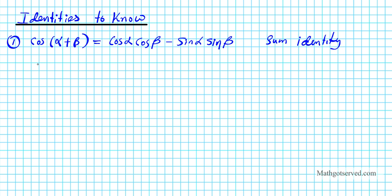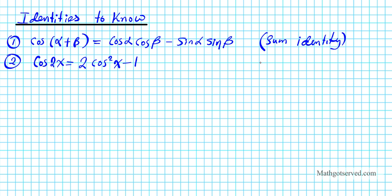Another identity you need to know is a version of the double angle identity for cosine: cosine 2x is equal to 2 cosine squared x minus 1. There are two other variations — 1 minus 2 sine squared x, and cosine squared x minus sine squared x — but this is the one we're going to be using.